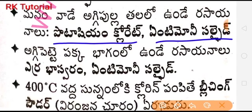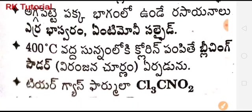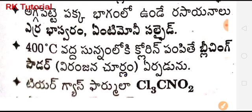Next, below 41 degrees Celsius, dry lime mixed with chlorine gives bleaching powder — also called Viraanjanu churna. Next, the formula for tear gas is CCl3NO2.